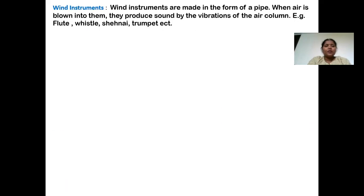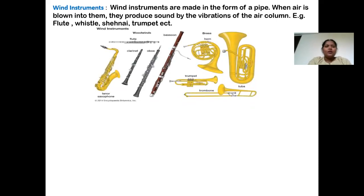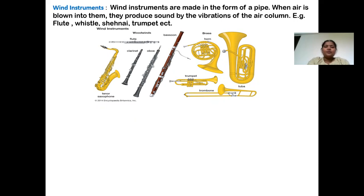The first type of musical instrument is the wind instrument. We all know the flute. If you observe the flute, it is made by a hollow pipe. So all the wind instruments like flute, whistle, shehnai, trumpet, etc. are made by a hollow pipe. When air is blown into them, they produce sound by the vibration of the air column. Here are some wind instruments you are able to see on the screen.